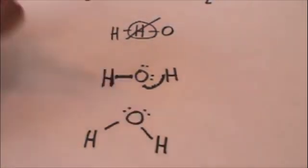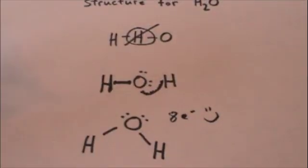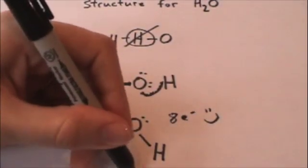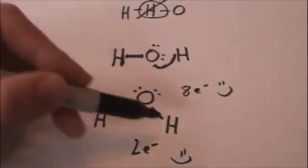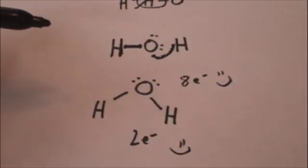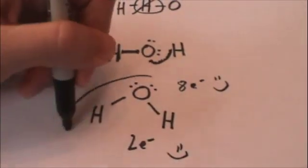Oxygen now has two, four, six, eight valence electrons. Oxygen's happy. Hydrogen has its two electrons. So each of those hydrogens has its complete duet. That is the correct Lewis dot structure for water.